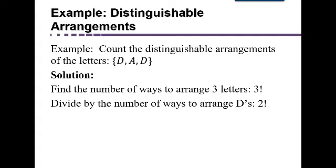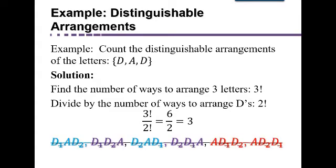So we've over-counted by a factor of two factorial. And so we're going to divide by that in order to get to the number of really distinguishable arrangements. So three factorial divided by two factorial is six divided by two, which is three. So that's really the actual distinguishable arrangements.